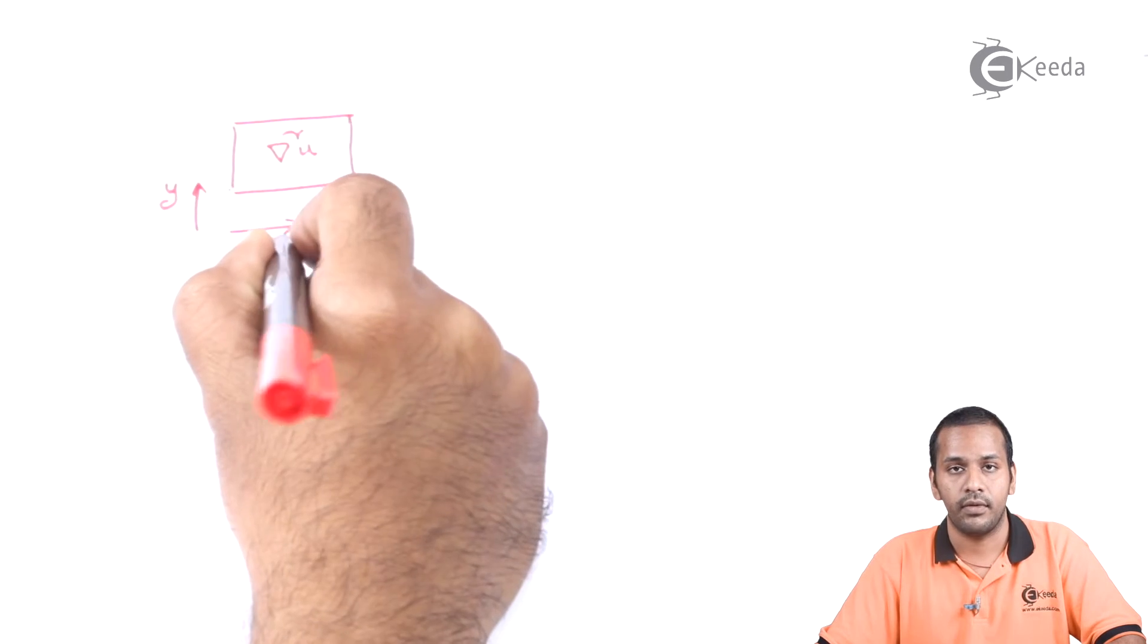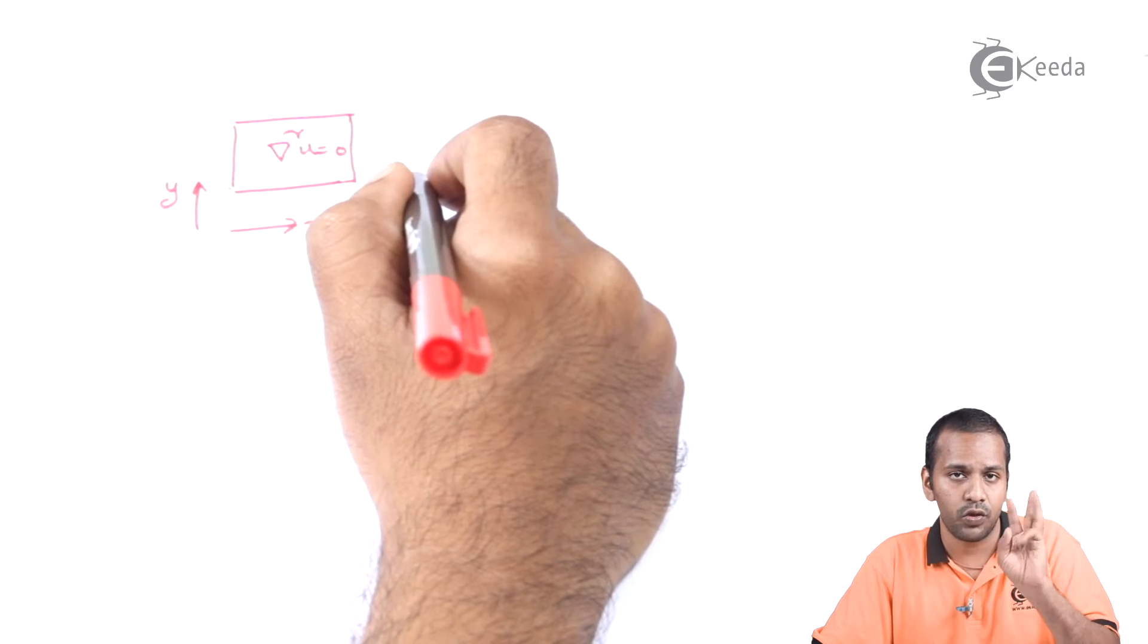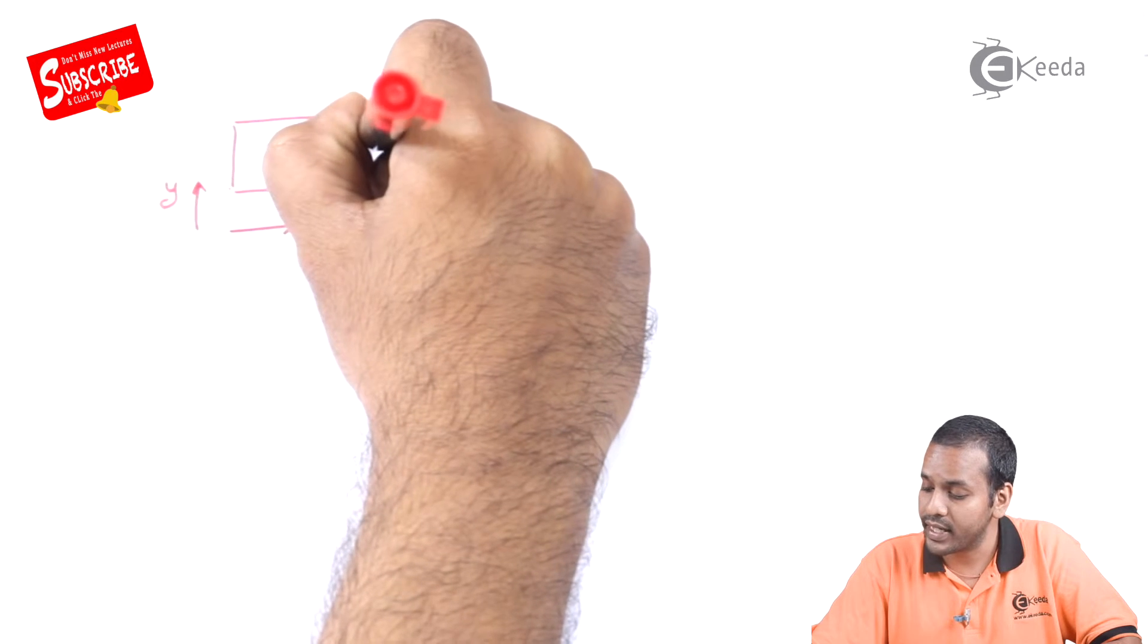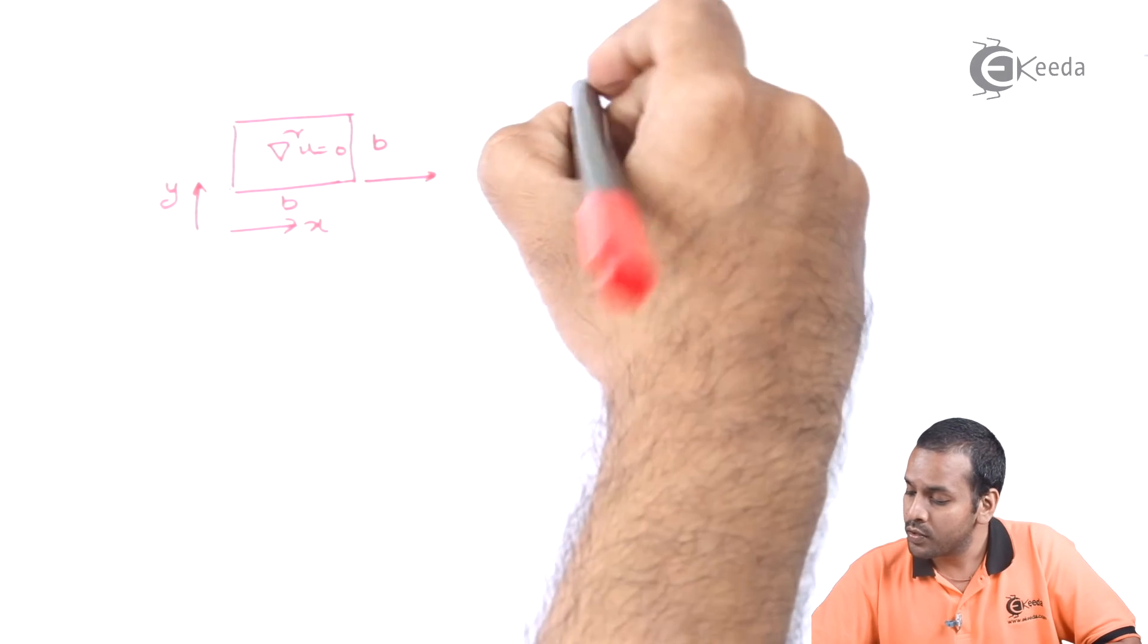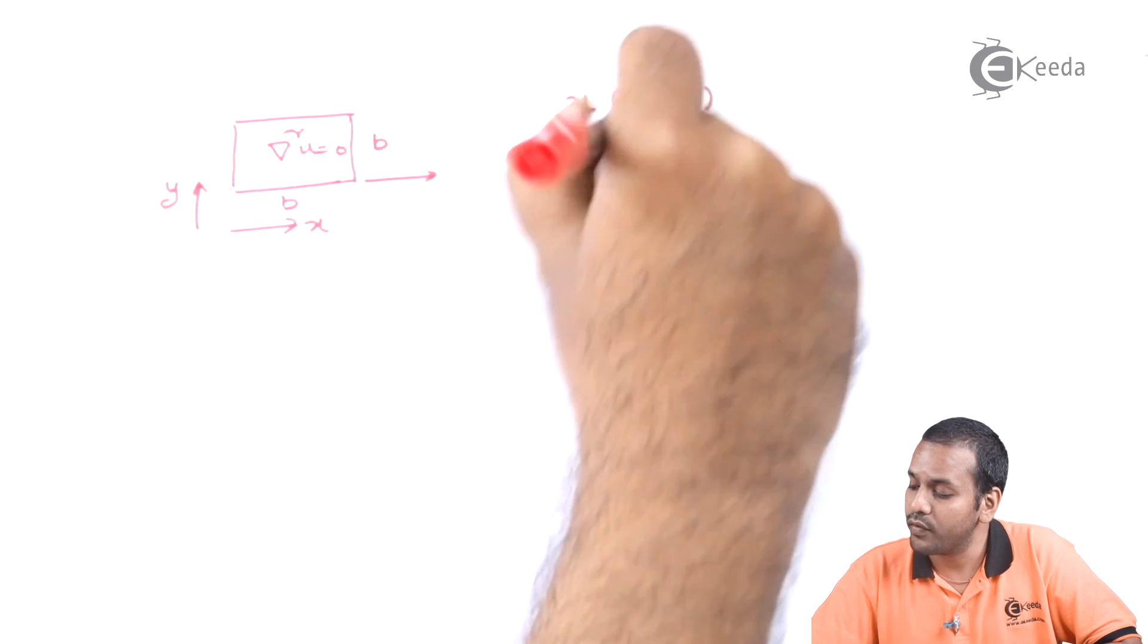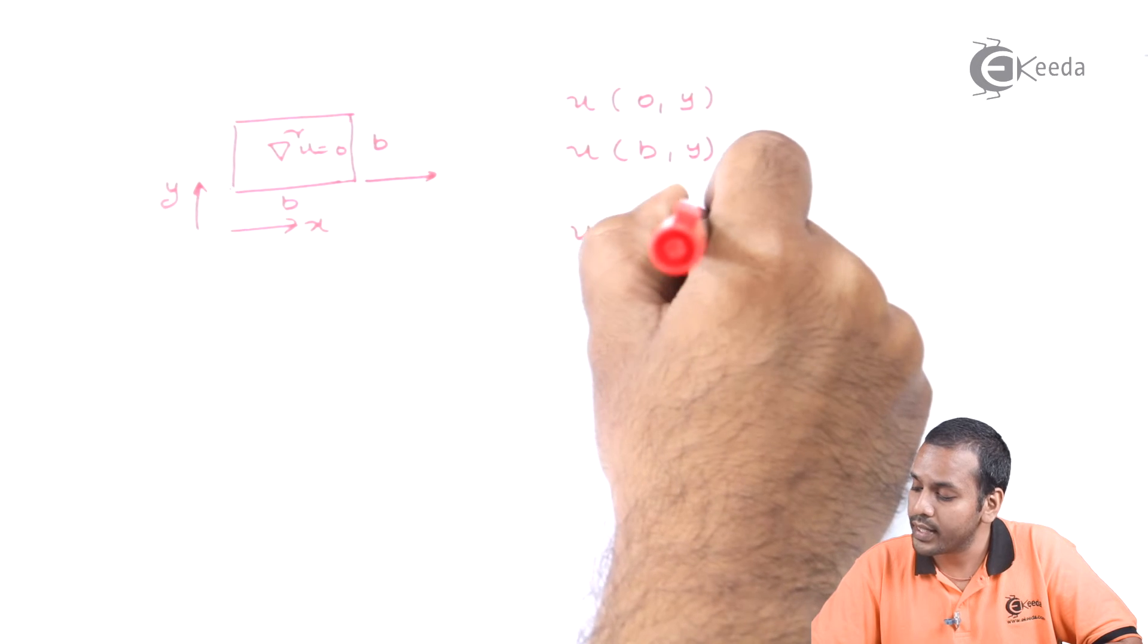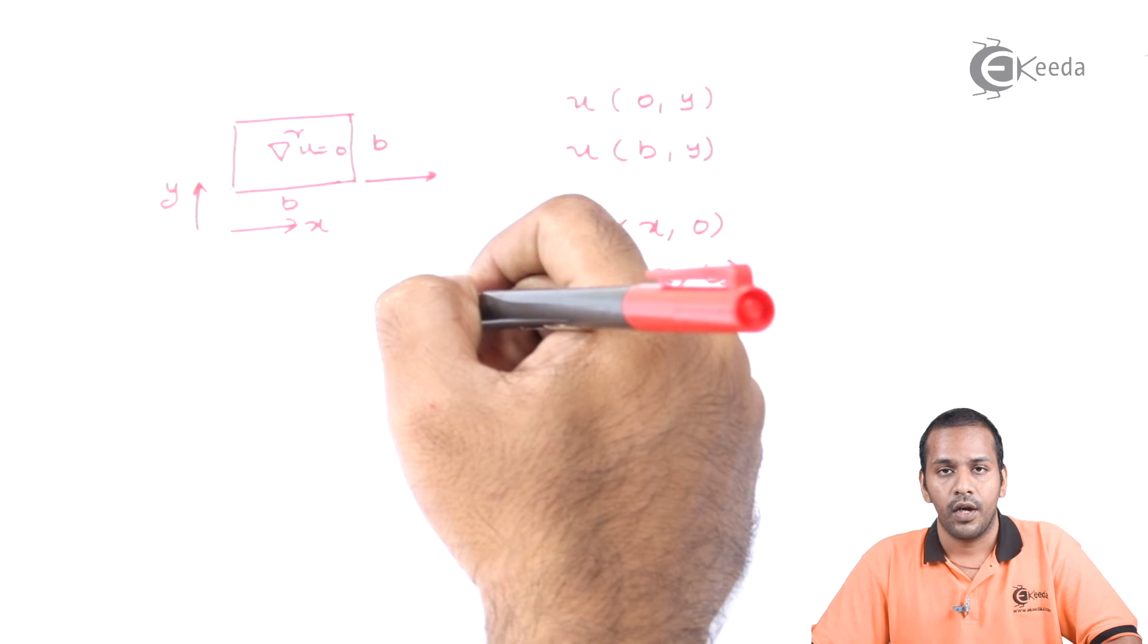If I want to solve my Laplace equation in this domain, del square u is equal to zero. In this domain I need two x conditions, two y conditions. I need a boundary condition at x = 0, and let us say this is b - the dimensions of the square. I need boundary conditions u(0, y) and u(b, y), as well as u(x, 0) and u(x, b).